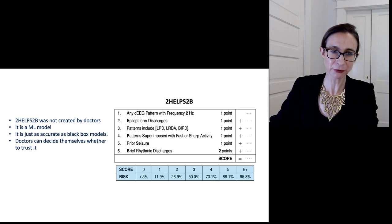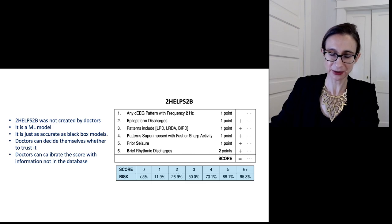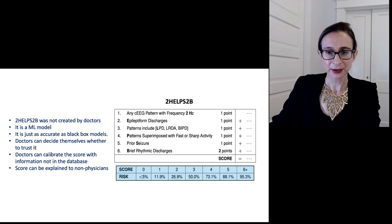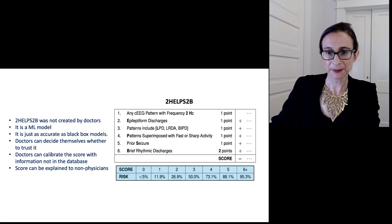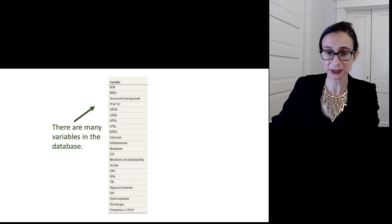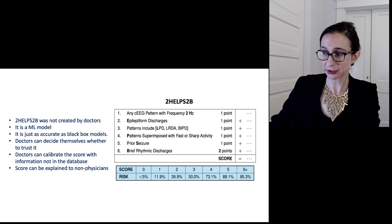The nice thing about 2HELPS2B is that it doesn't force you to trust it. Doctors can decide themselves whether they want to trust it. Also, doctors can calibrate the score with information not in the database — if a doctor looks at a patient and sees something not captured, they can add an extra point. The score can also be explained to non-physicians, for example explaining why someone is being taken off EEG monitoring.